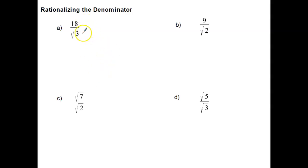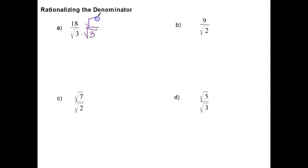The first thing we want to do when rationalizing the denominator is look to make sure that the number under the radical is not a perfect square. Because if it is, it's just a matter of taking the square root. But 3 is not a perfect square. So to get rid of the radical in the denominator, we're going to multiply both the numerator and the denominator by the radical that's in the denominator. Really, we're multiplying by 1, because radical 3 over radical 3 equals 1, so we're not changing the value.